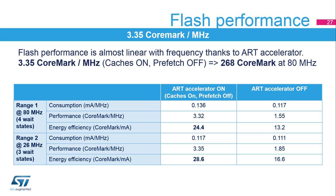The performance of the flash memory is almost linear with frequency using the ART accelerator. The Coremark score is 268 at 80 MHz, which corresponds to 3.35 Coremark per MHz when instruction cache, data cache are enabled and the prefetch buffer is disabled. When the ART is disabled, the performance is only 1.55 Coremark per MHz. Comparing energy efficiency, enabling the cache yields 24.4 Coremark per MHz with ART enabled versus 13.2 Coremark per MHz when disabled. In range 2, energy efficiency rises up to 28.6 Coremark per MHz at 26 MHz.